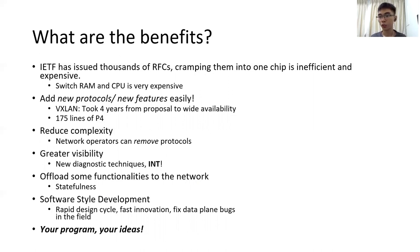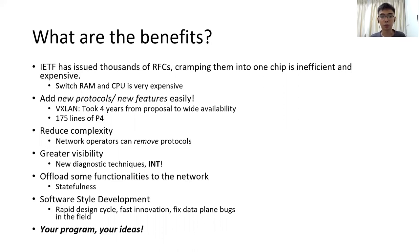If we are only doing IP packet forwarding, we don't need to care about firewalls and such — we can constrain our program to only do IP packet forwarding. That is how you can reduce complexity. Apart from that, if we want to add new protocols, even if the protocol itself does not exist in any standard, you can always add anything. For example, for VXLAN, it took four years to gain wide availability apart from the standardization process. But in P4, if we want VXLAN, it's just around 175 lines of P4 and you get it instantly.